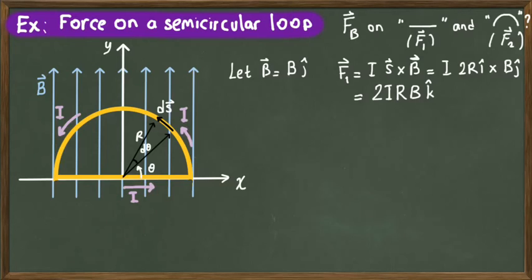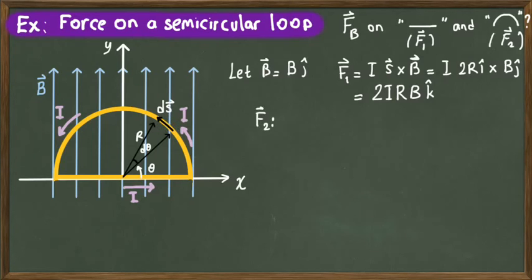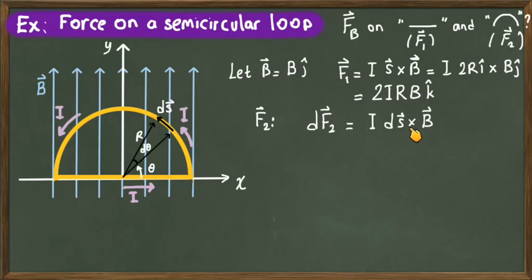Next, we calculate the magnetic force on the curved part of this current loop, which is in the shape of a semicircle. We decompose this semicircular part into small sections ds, and write the magnetic force on each small section as dF. We express dF2 in terms of the infinitesimal length vector ds and the magnetic field as I times ds cross B.